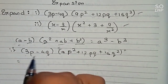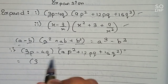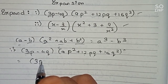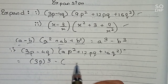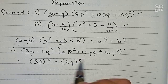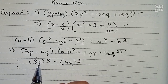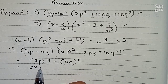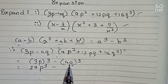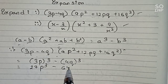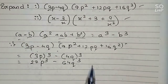So now we can easily write a cubed minus b cubed. A's value is 3p, so 3p cubed, minus 4q cubed. That is: 3 to the power 3 equals 27, so 27p cubed, minus 4 to the power 3 equals 64, so 64q cubed. So this is our answer for question number one.